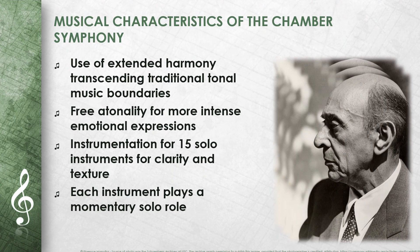In the Chamber Symphony No. 1, Schoenberg uses an extended harmony that transcends the traditional boundaries of tonal music. He uses a free atonality that enables him to achieve more intense emotional expressions. The instrumentation for 15 solo instruments allows for a high degree of clarity and textural variety. Each instrument has a solo role at times, resulting in a very personal and expressive sound world.